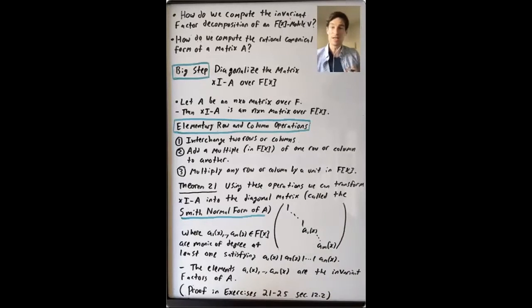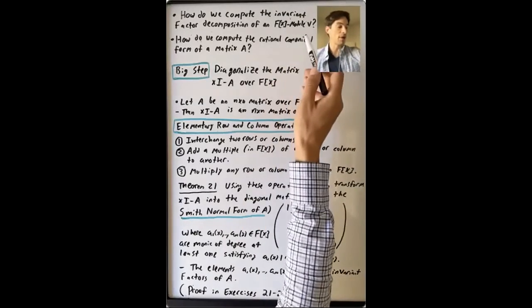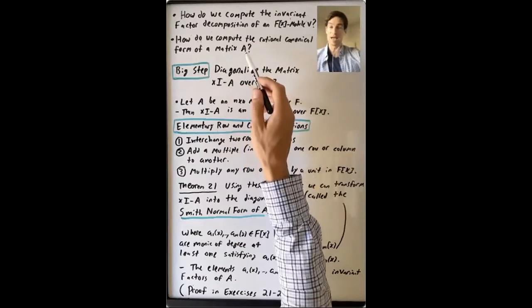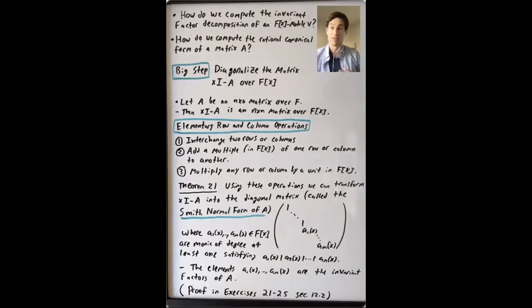A related question is, how do you compute the rational canonical form of an n by n matrix A with entries in F? We know that every n by n matrix A is similar to a unique matrix in rational canonical form. How do you find which one?